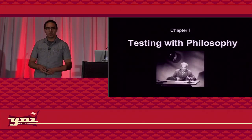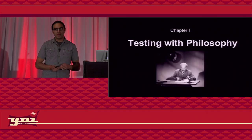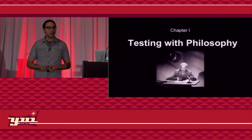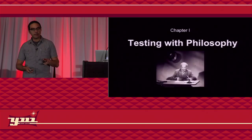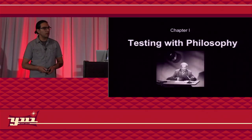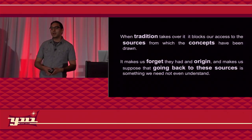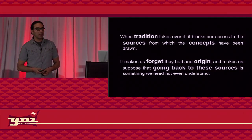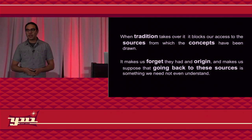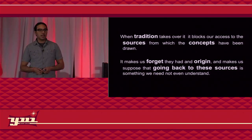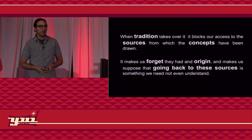Around the same time, I was reading some philosophy — that's what I do when I'm bored. I found a couple of ideas related to this problem of concepts and interpretation. This good-looking old man is one of the greatest philosophers ever: Martin Heidegger. The first idea is about tradition. He says that when tradition takes over, it pretty much blocks our access to the original sources where we got the concepts, making us forget that these concepts at some point had an origin.